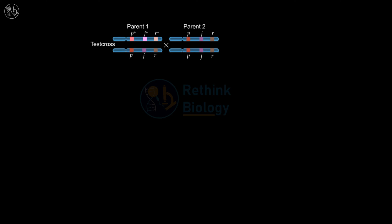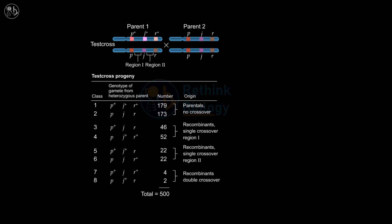The region between genes P and J is called region 1, and the region between genes J and R is called region 2. The test cross progeny are also rewritten based on the gene order. The recombinant classes result from either a single crossover in region 1, a single crossover in region 2, or a double crossover involving one crossover in each region.